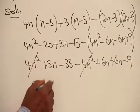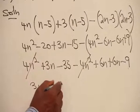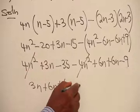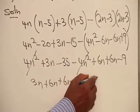We have 3n, followed by 6n, followed by another 6n. We now have minus 35 and then minus 9.